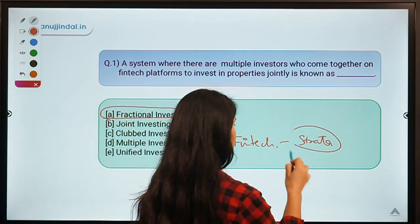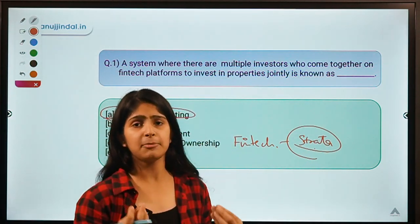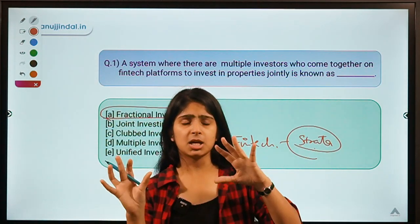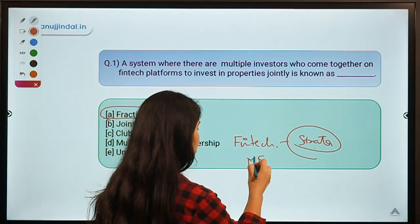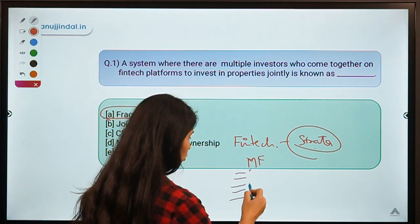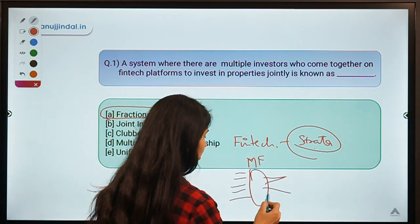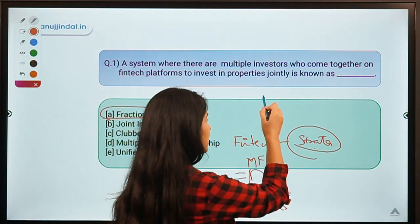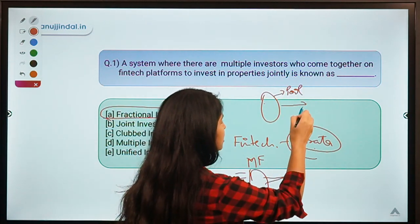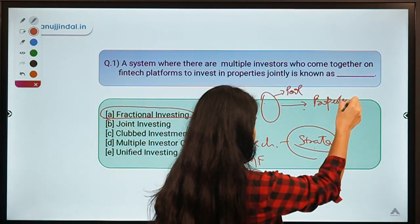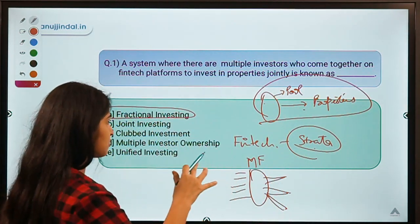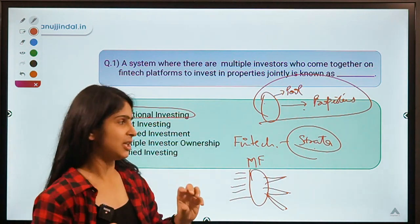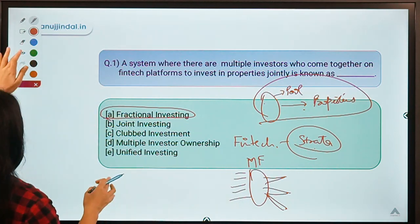With the advent of technology, we have fintech platforms like Strata where people can come and pool their resources and then buy a stake in a property. This is similar to a mutual fund, where many investors provide money, forming a pool that is invested into different kinds of investments. This type of investment is known as fractional investing because you're not buying one whole property — you're buying a fraction of it.